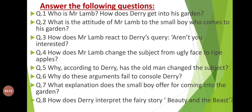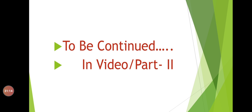Now I have given you a few questions to write answers for. Question 1: Who is Mr. Lamb? How does Derry get into his garden? Question 2: What is the attitude of Mr. Lamb to the small boy who comes to his garden? Question 3: How does Mr. Lamb react to Derry's query 'Aren't you interested?' Question 4: How does Mr. Lamb change the subject from ugly face to ripe apples? Question 5: Why, according to Derry, has the old man changed the subject? Question 6: Why do these arguments fail to console Derry? Question 7: What explanation does the small boy offer for coming into the garden? Question 8: How does Derry interpret the fairy story Beauty and the Beast? This chapter will be continued in part two. Thanks for watching and listening.